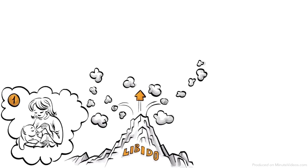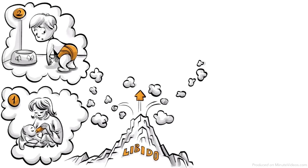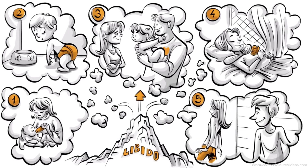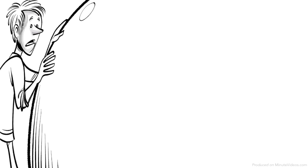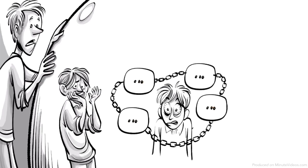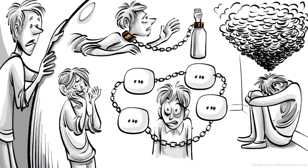The phases are called oral, anal, phallic, latency and genital. If our experience during any of these phases was traumatic we might develop fixations later in life such as neurosis, dependencies, addictions or depression.